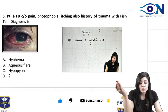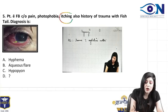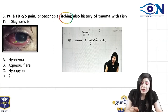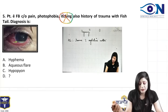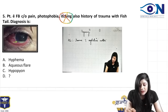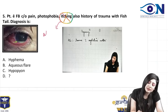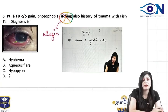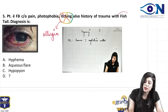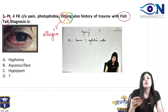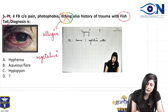A patient presents with a foreign body sensation, pain, and photophobia. They have also tried to confuse you with itching — but ideally, itching should not be used here. Itching is a word used for allergic conjunctivitis or allergic keratitis, so it should not have been given in this context.